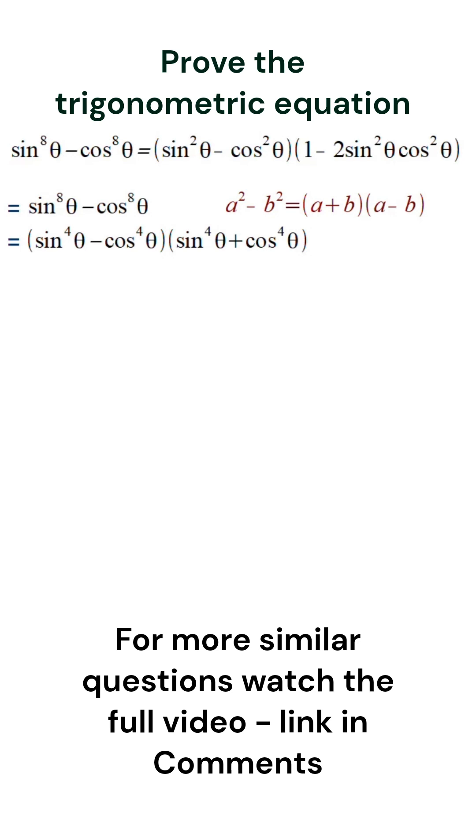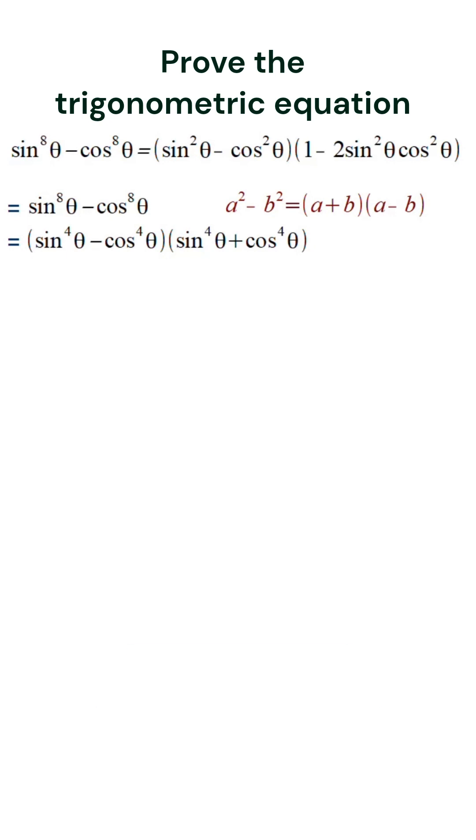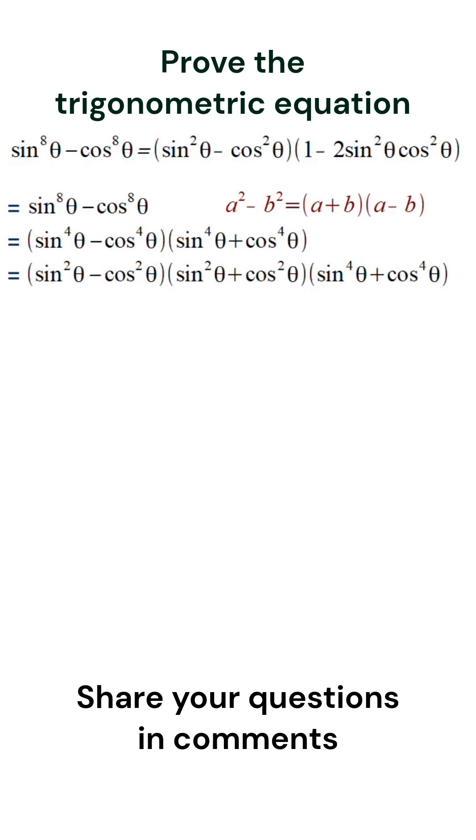we will get the expanded version. Again we can apply a² - b² formula in the first term assuming a equal to sin²θ and b equal to cos²θ.